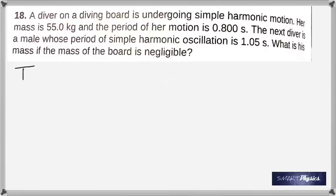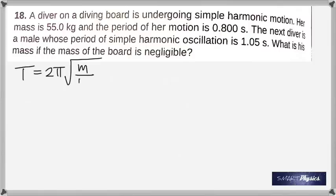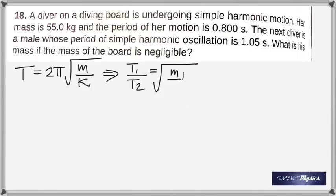Question three: a diver on a diving board is undergoing simple harmonic motion. Her mass is 55 kilograms and the period of her motion is 0.8 seconds. The next diver is a male whose period of simple harmonic oscillation is 1.05 seconds. What is his mass, assuming the mass of the board is negligible? This is a comparison problem. The diving board acts like a spring, so we use the formula for time period: T = 2π√(m/k). Take the ratio T1/T2 = √(m1/m2) and make m2 the subject.